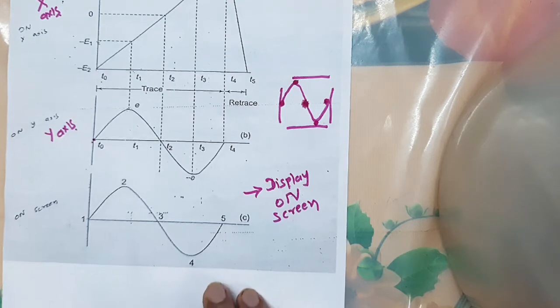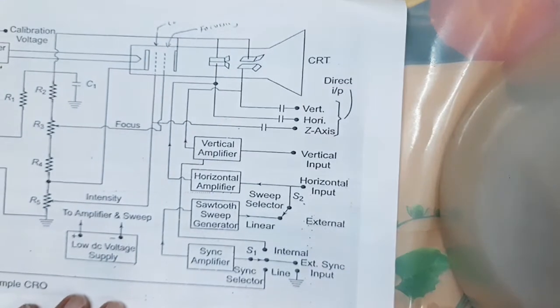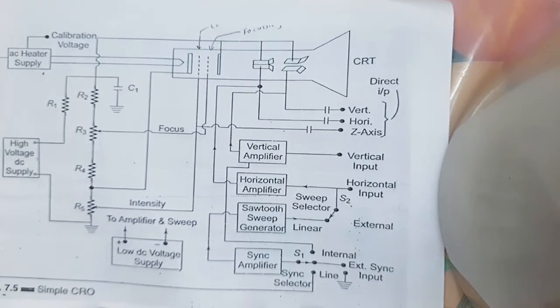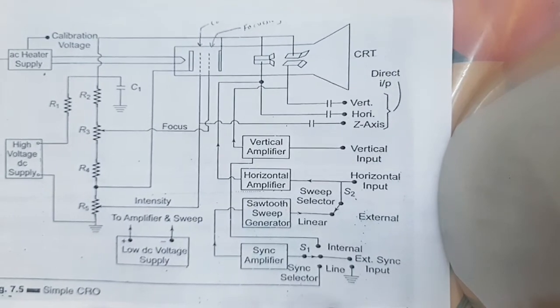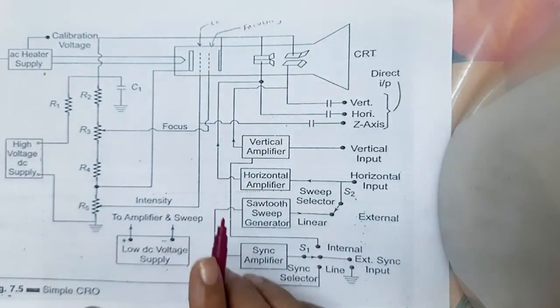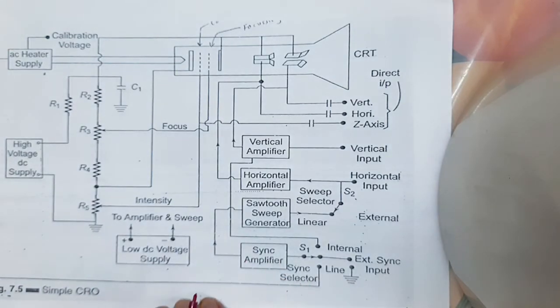Now we are discussing the whole structure of the CRO. This is our whole structure of the CRO. We will repeat one by one all the components we already discussed. This is our simple CRO — the basic block diagram of a simple CRO is given here.